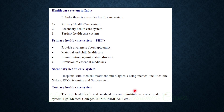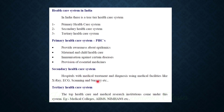India follows a three-tier healthcare system: primary health care, secondary health care, and tertiary health care. Primary health care provides awareness about epidemics, maternal and child health care, immunization against diseases, and provision of essential medicines. Secondary health care involves hospitals, medical treatment, and diagnosis using medical facilities like X-ray, ECG, and scanning.